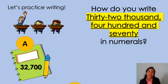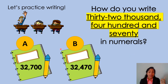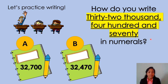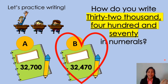Let's practice writing! How do you write 32,470 in numerals? You are going to choose between letter A and letter B. So which is the answer? 32,470. The correct answer is letter B, 32,470.